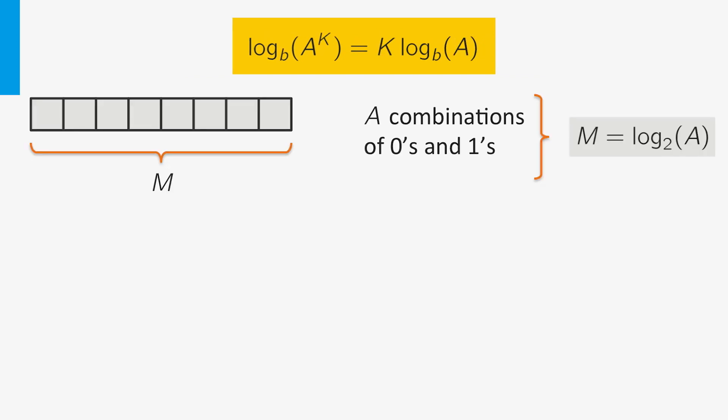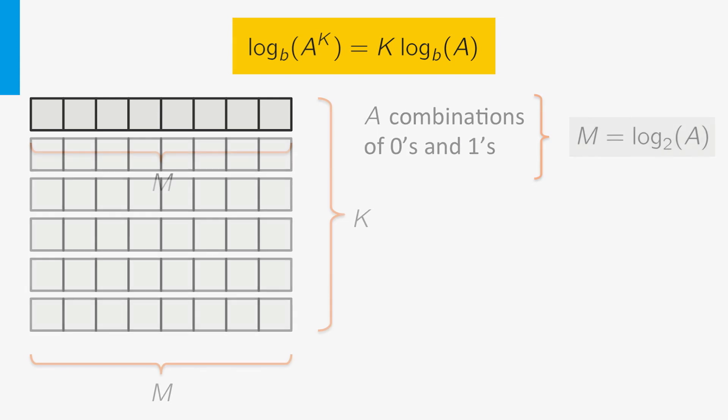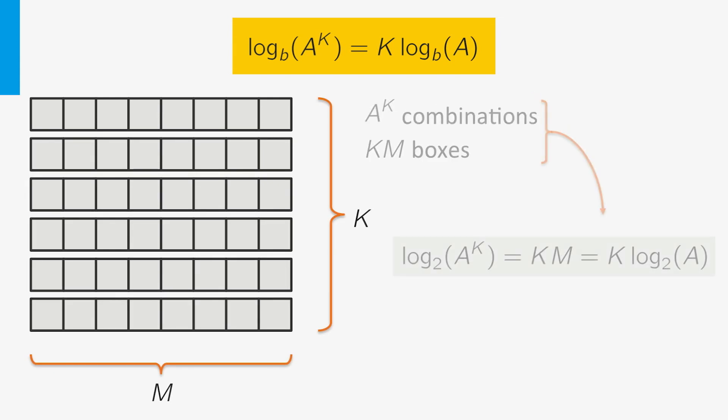Let's take the first set of boxes again. We have A combinations and M boxes, so M is equal to the log of A. Now we assume that we have k of these sets. If we put them all together, we have k times M boxes and A to the power k possible combinations of zeros and ones. This gives log of A to the power k is equal to k times M which is equal to k times the log of A. So we can take the exponent out of the logarithm.